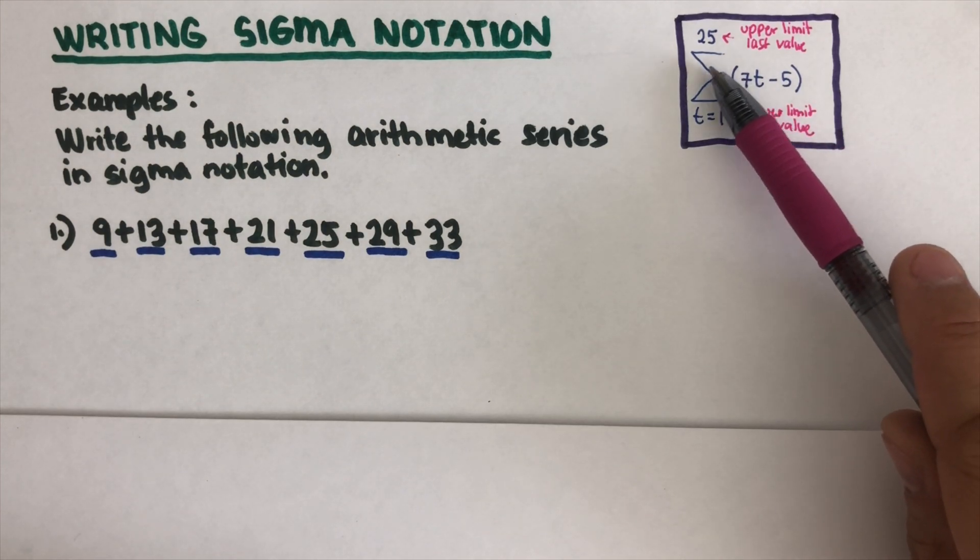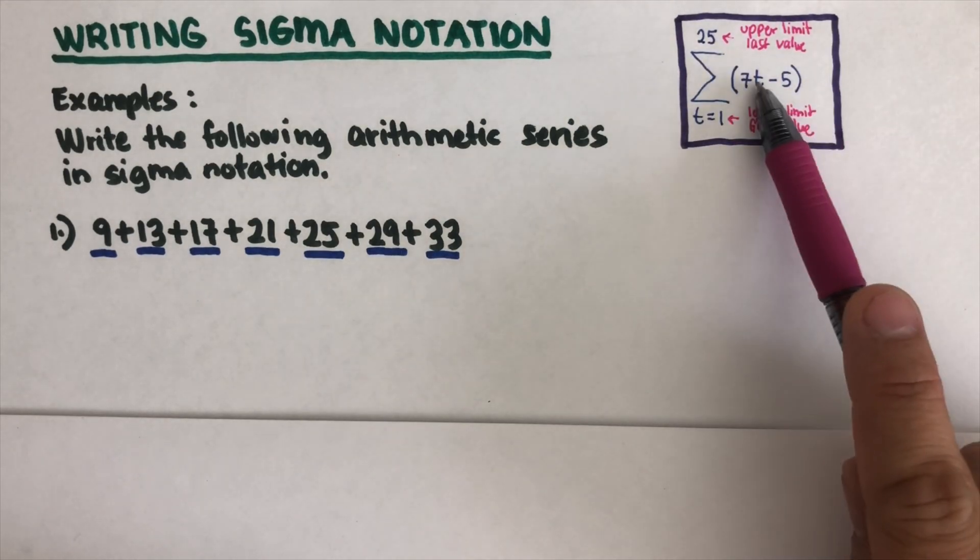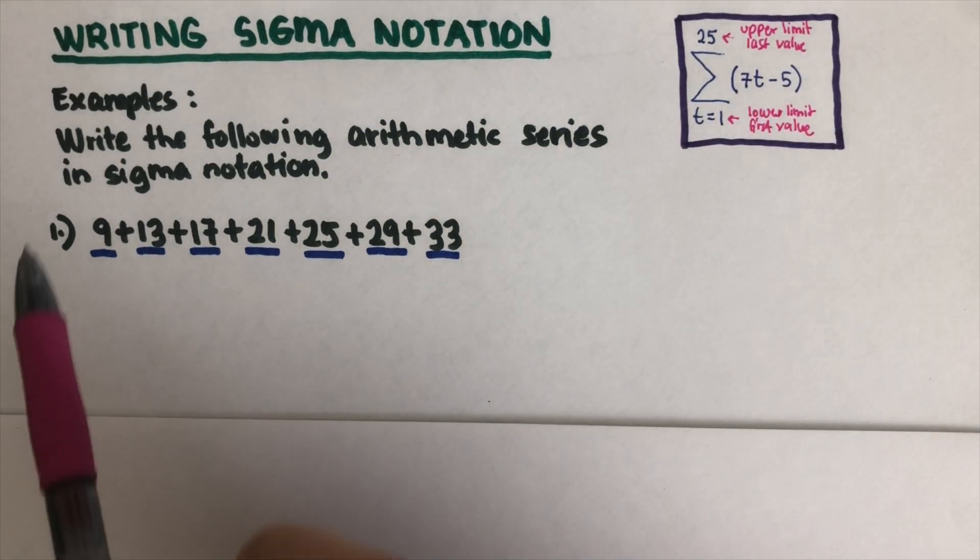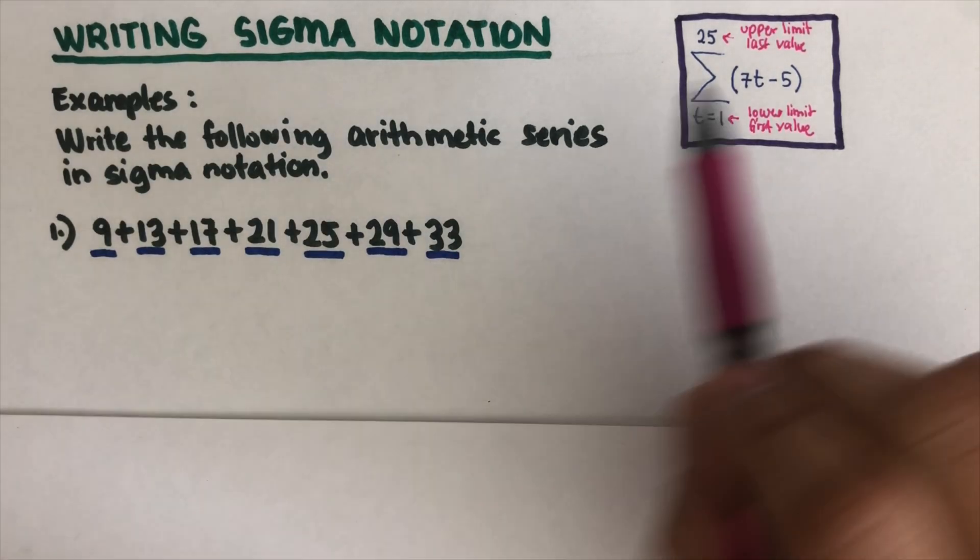This is the Greek letter Sigma. This is the first value, this is the last value, and this is the equation. Let's have the first example right here to see how we can write the Sigma notation.